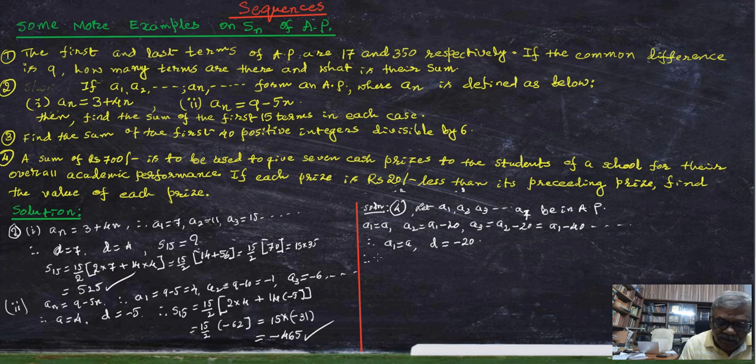And a_7 is equal to, according to the total expense, a plus 6 times minus 20 is equal to 700.